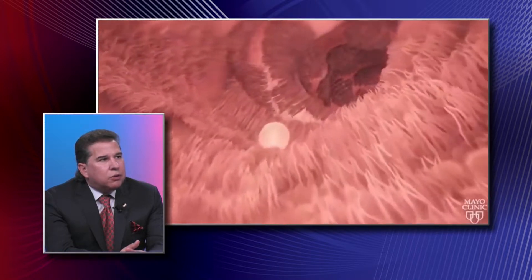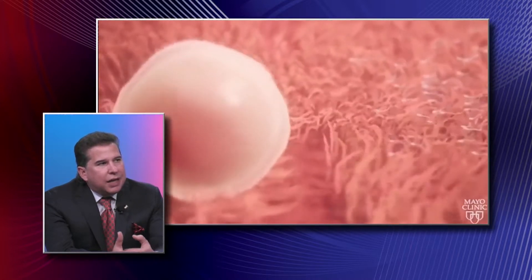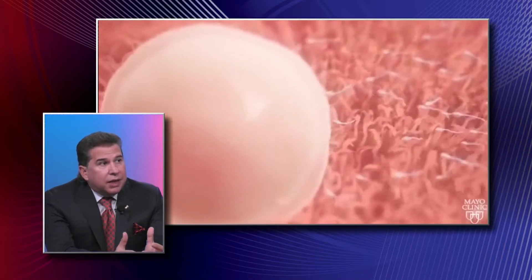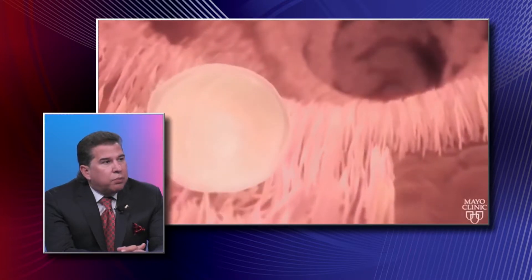Once it goes through the fallopian tube — and that's the reason sometimes for ectopic pregnancy — those structures are called ciliates. If you have any type of damage to those fallopian tubes, the ciliates cannot move the egg properly. A lot of times, implantation after fertilization ends up in the fallopian tube. Now we can see the sperm running into the egg.